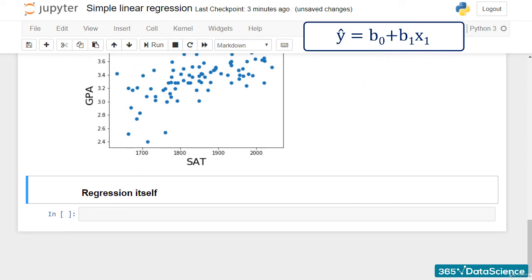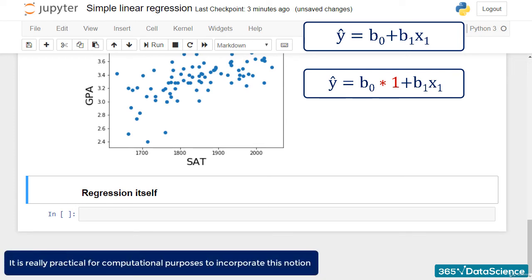That can be represented as b0 times 1, right? So, if there was an x0, it would always be 1. It is really practical for computational purposes to incorporate this notion into the equation. And that's how we estimate the intercept b0.